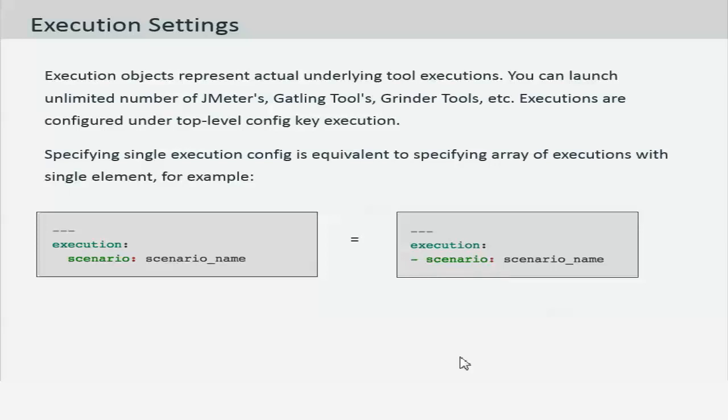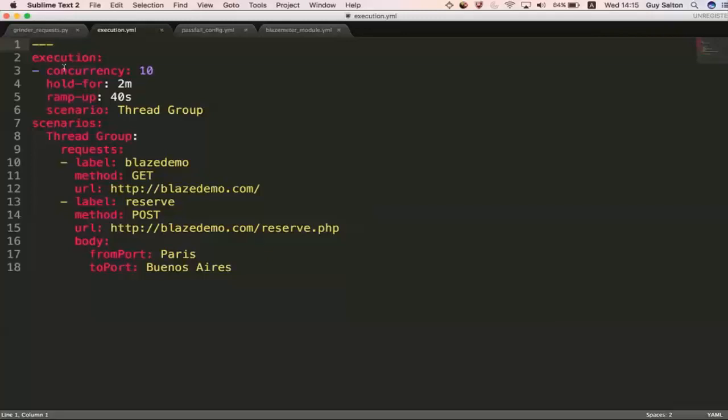Let's see an example on this. Now if you see this example script for execution, I'm using three dashes to represent the start of the document and then under execution if you see I have used a single dash to represent list of elements and I have defined all the execution attributes execution settings under this list as one single execution.